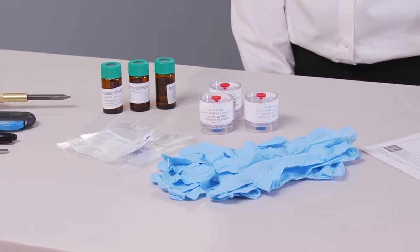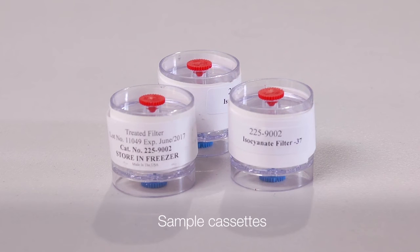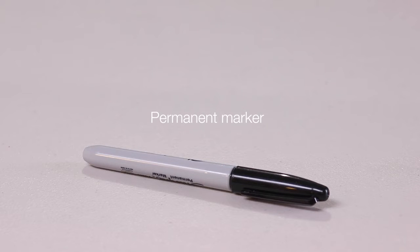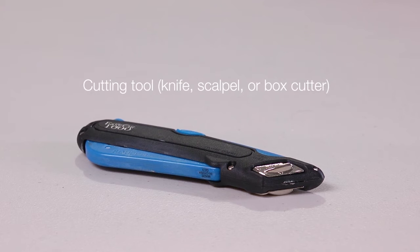These are the items you will need: sample cassettes including a field blank, laboratory supplied vials one per sample, permanent marker, cutting tool, knife, scalpel or box cutter.